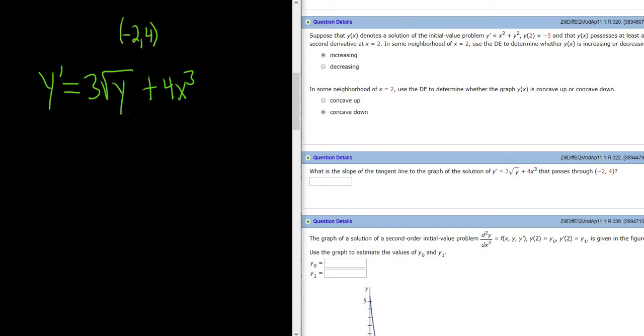The first observation you have to make is that the solution to this DE is y. So the slope of the solution is the slope of y, which is the derivative of y. This gives us the slope.